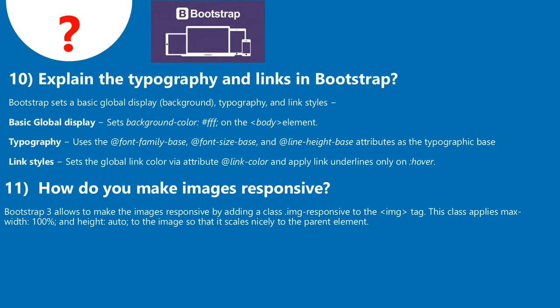Question 10: Explain typography and links in Bootstrap. Bootstrap sets a basic global display, background, typography and link styles. Global display sets background color #fff on the body element. Typography uses the @font-family-base, @font-size-base, and @line-height-base attributes as the typographic base. Link style sets the global link color via @link-color and applies link underlines only on hover.